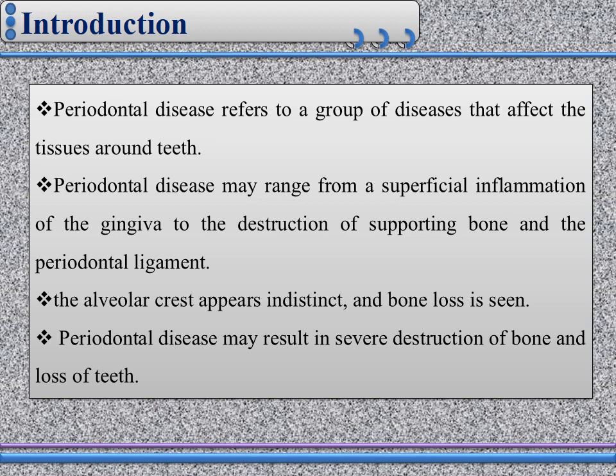Periodontal disease refers to the group of diseases that affect the tissue around the teeth. The periodontium normally consists of alveolar bone with the alveolar crest, which is the coronal part of alveolar bone, together with the periodontal ligament and lamina dura. Periodontal disease may range from superficial inflammation of the gingiva to the destruction of the supporting bone and periodontal ligament. The alveolar crest appears indistinct and bone loss is seen. Periodontal disease may result in severe destruction of alveolar bone and loss of teeth.